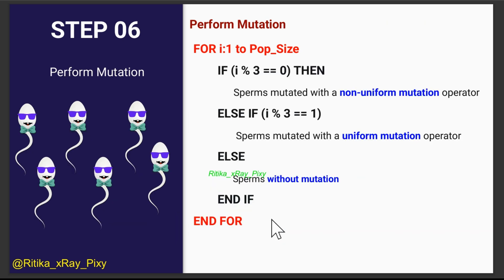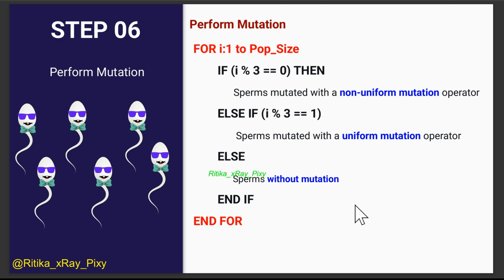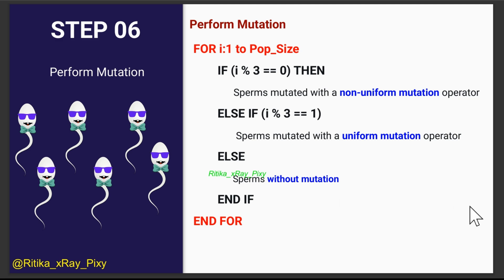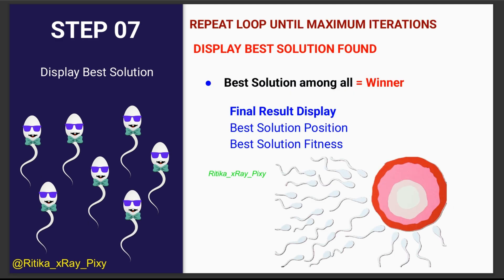After the velocity update, we perform mutation. The population is divided into three groups for variety: non-uniform mutation, uniform mutation, and no mutation. Non-uniform mutation adds small uneven changes to the sperm position, uniform mutation adds even changes, and no mutation keeps the position unchanged. This ensures diversity in sperm and improves convergence. Mutation is introduced to increase diversity and prevent the algorithm from getting stuck in local optima.